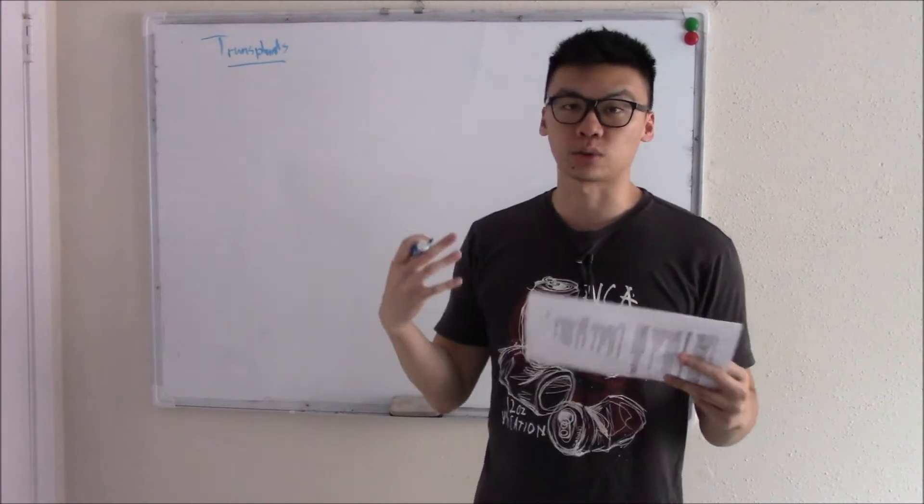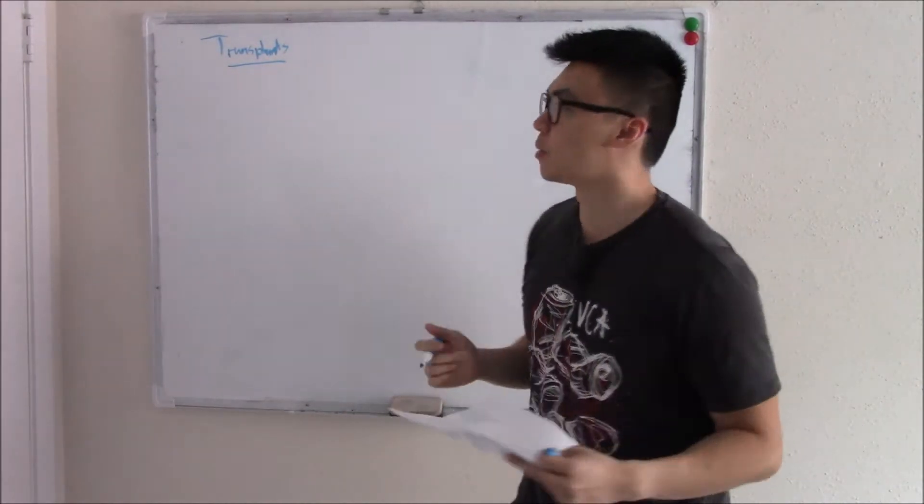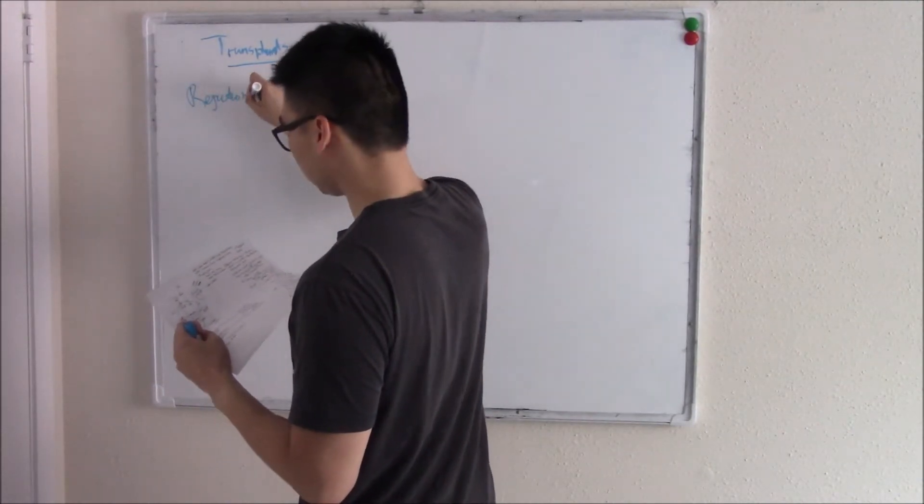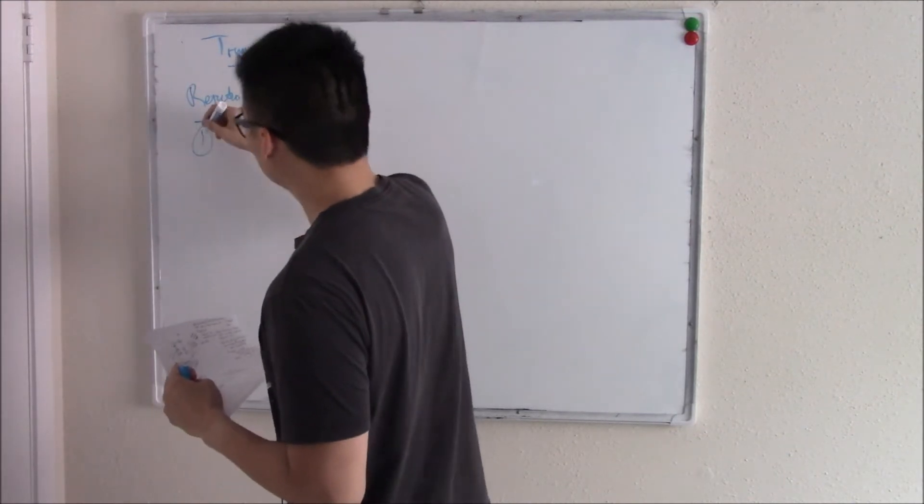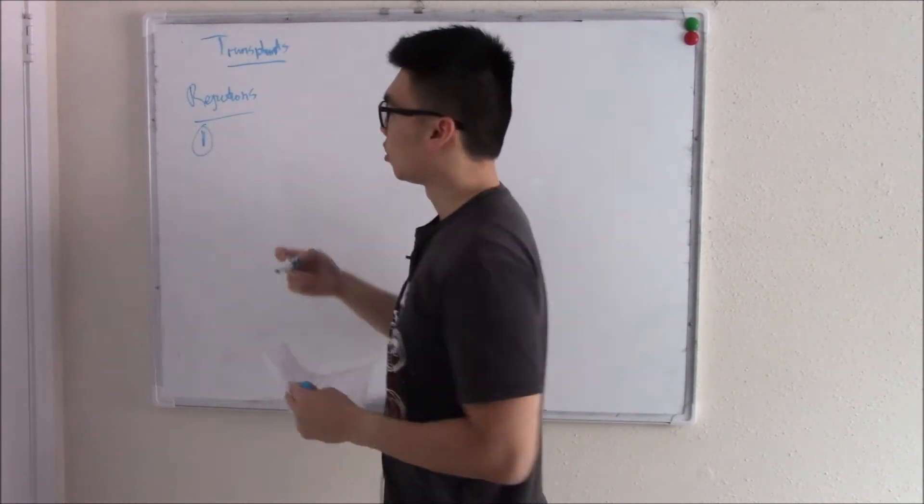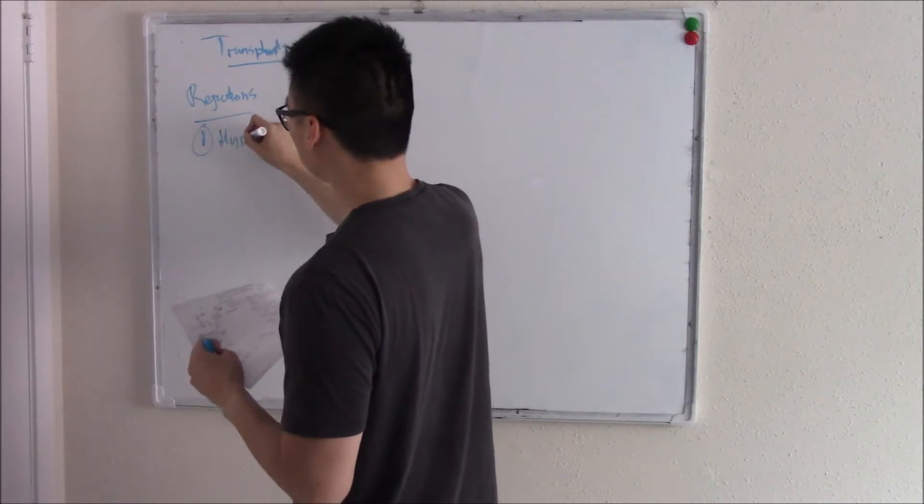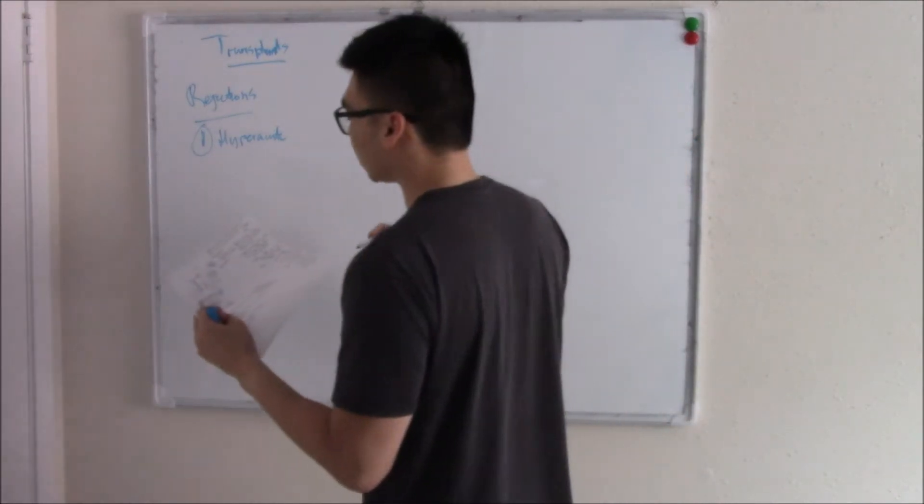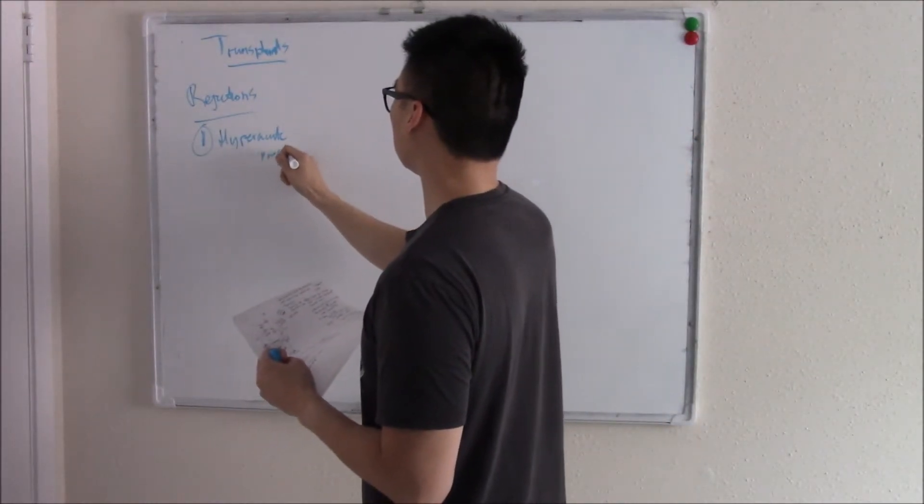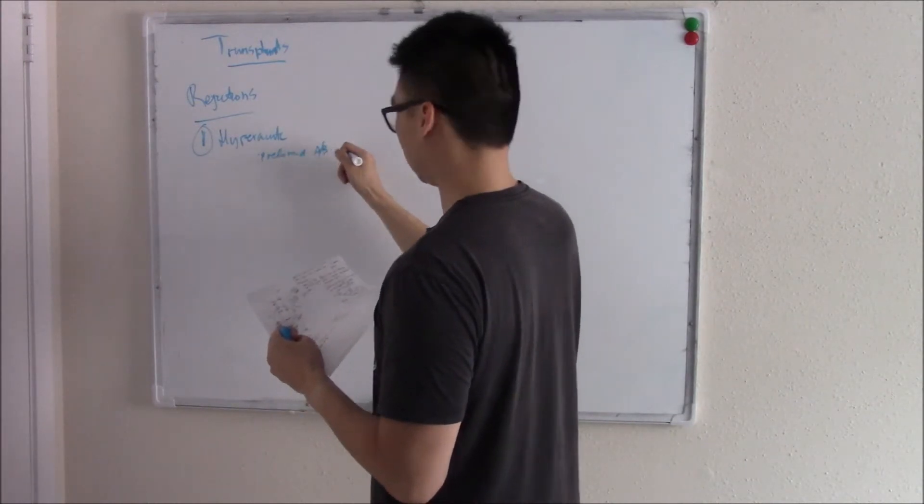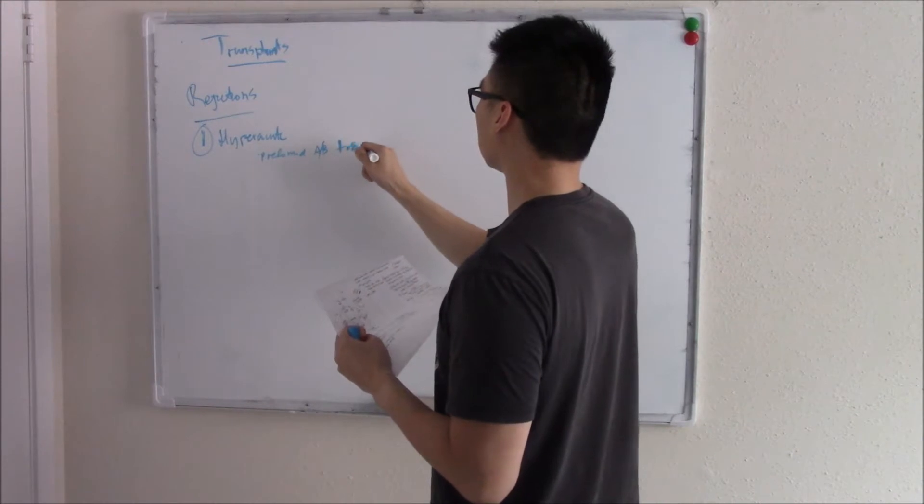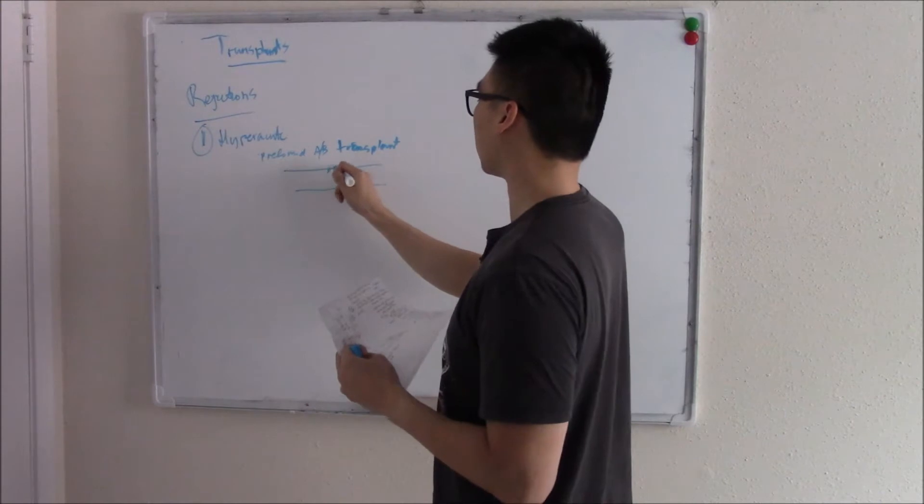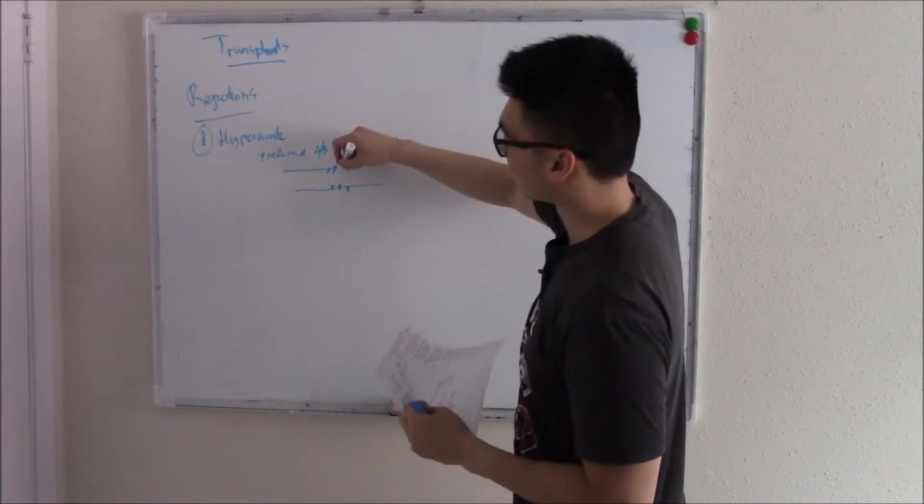The first thing I want to talk about is transplant rejection. That's one of the key things you need to know - the fact that it can get rejected. If rejection occurs within minutes, we call that hyperacute. And they'll tell you that in the question stem, they'll reject it within minutes. What happens is you have preformed antibodies against the transplant and it will attack it, attack its blood vessels and damage the endothelium.